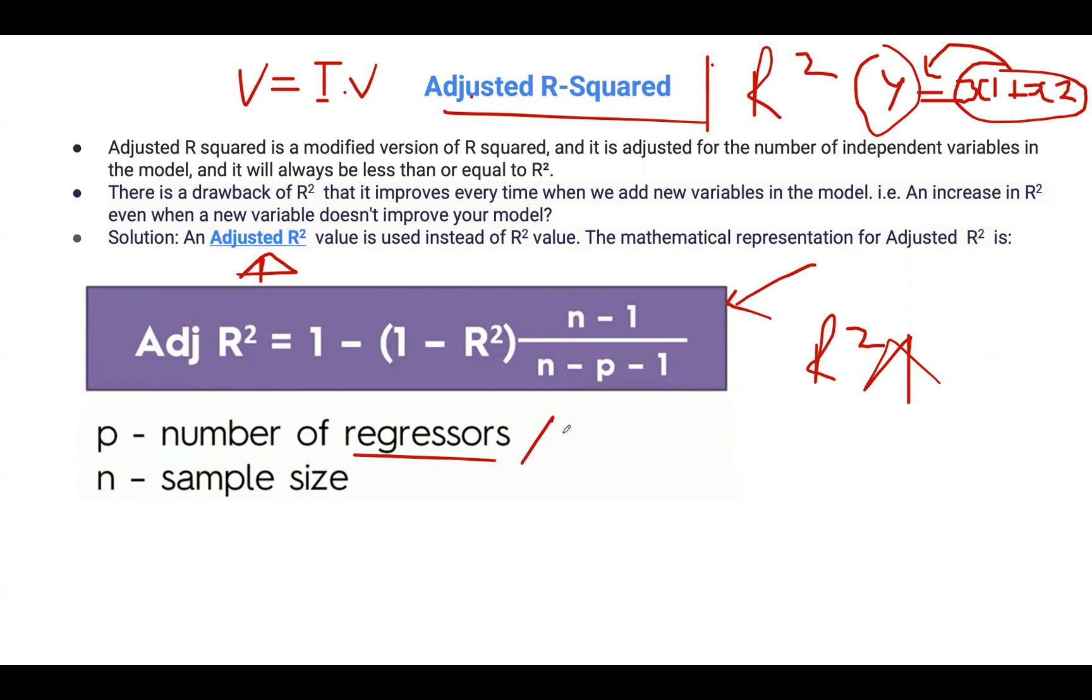Or sometimes we call this predictors. N is the sample size or the number of observations in the data. Remember, P is the number of independent variables in the model.